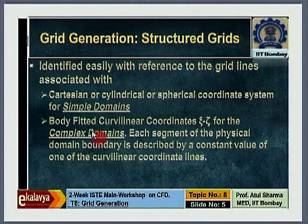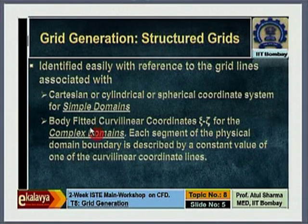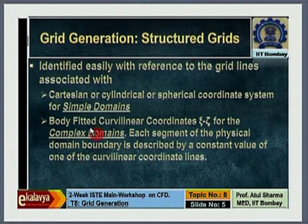Let me discuss what is called a curvilinear grid. When we generate a grid there are two types, one of which is called a body-fitted grid, where the grid lines fit the boundary. For a Cartesian coordinate system there are two families of lines. Let me draw the simple domains on the whiteboard.